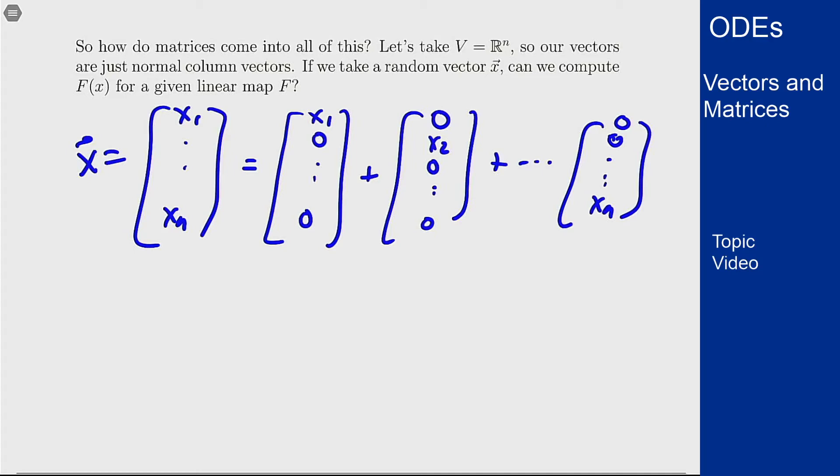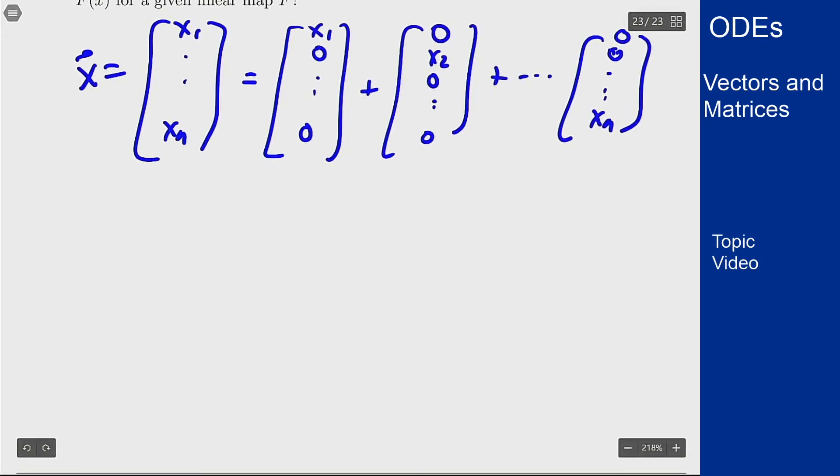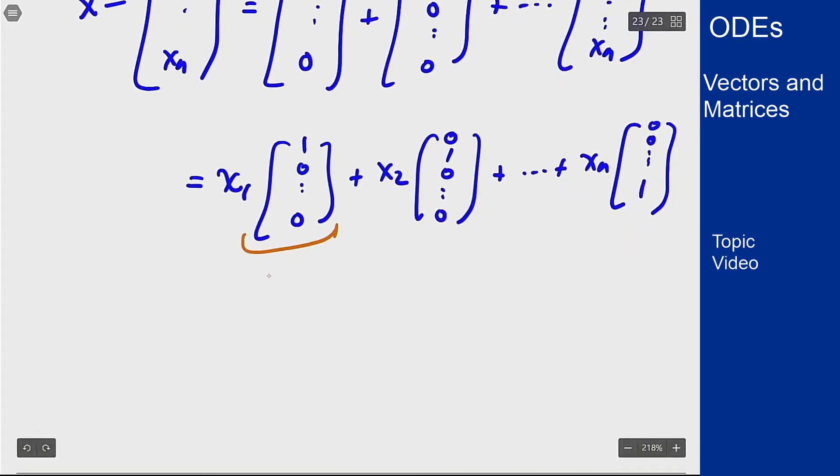I can now pull out the constant from each term, pulling out the x to the front, leaving me with x1 times [1, 0, 0], plus x2 times [0, 1, 0] and all zeros, plus ... plus xn times [0, 0, 1]. We'll give some names to these guys. We'll call each of these e and then the number of the thing that's 1, because it's a 1 and all zeros. So that's e1, this will be e2, and this will be en. These are called the standard basis vectors of our vector space.